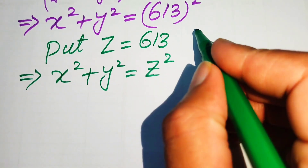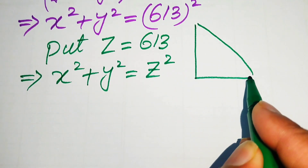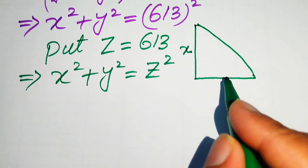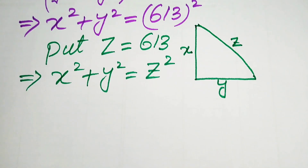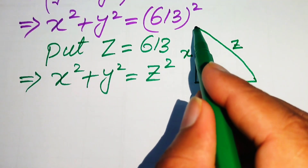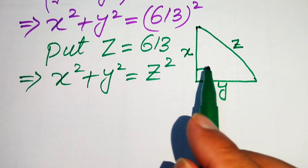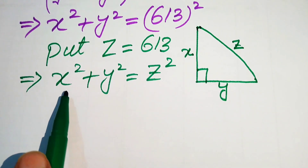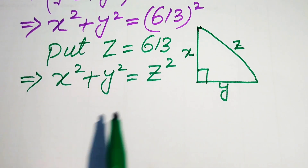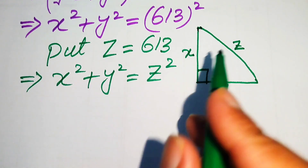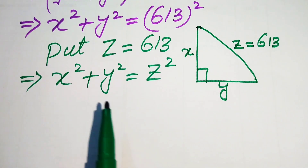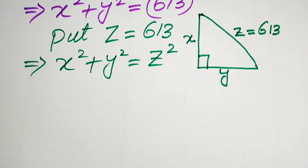We draw a right triangle where one side is x, another side is y, and the hypotenuse is z, with the right angle opposite z. According to the Pythagorean theorem applied to this right triangle, x² + y² = z². Since z = 613, we use Pythagoras to find x and y.